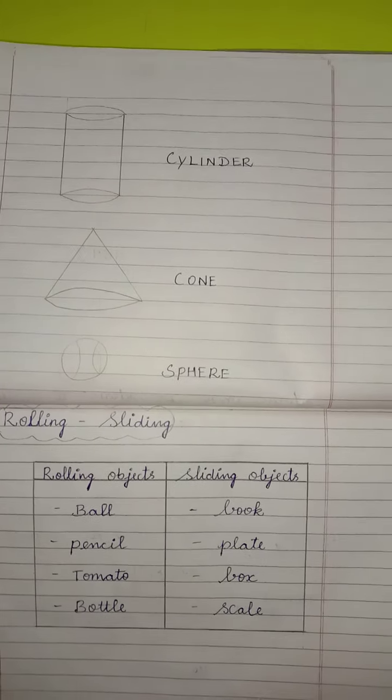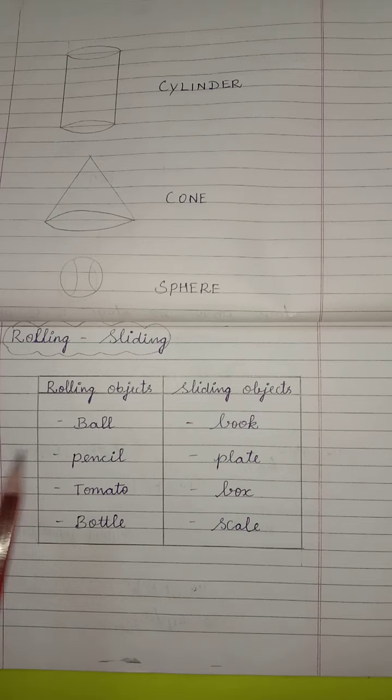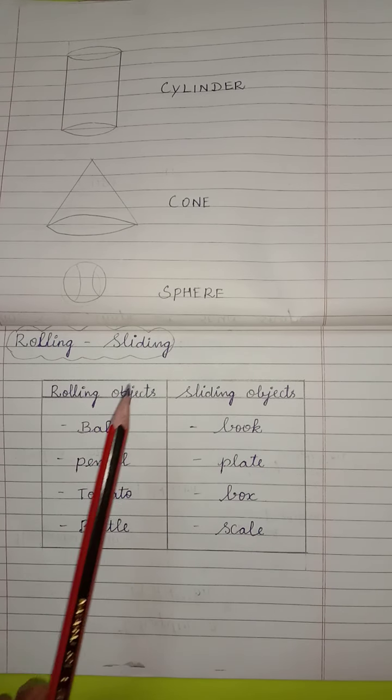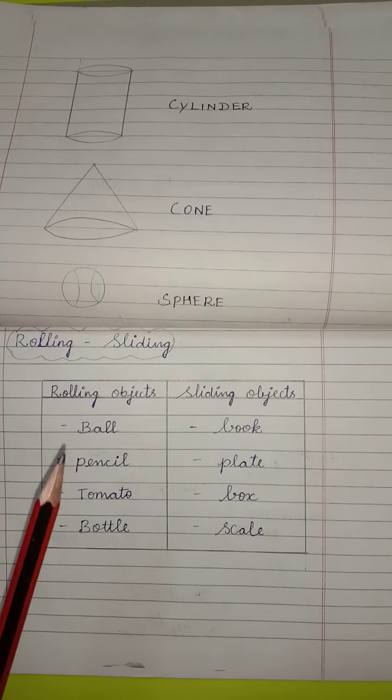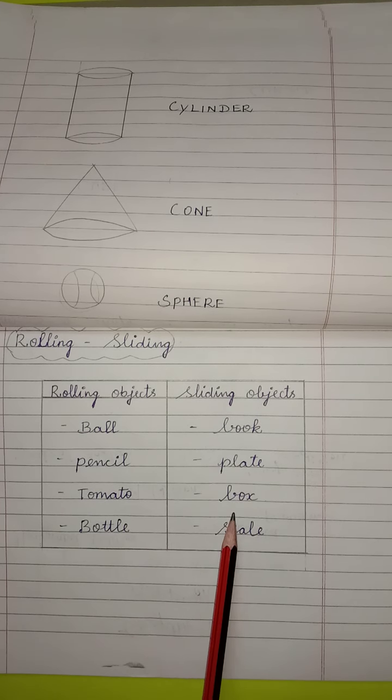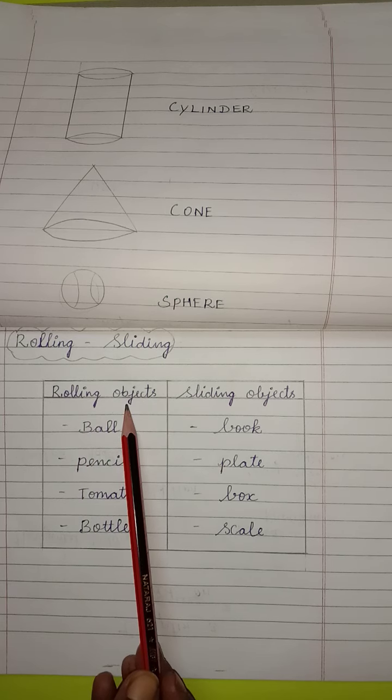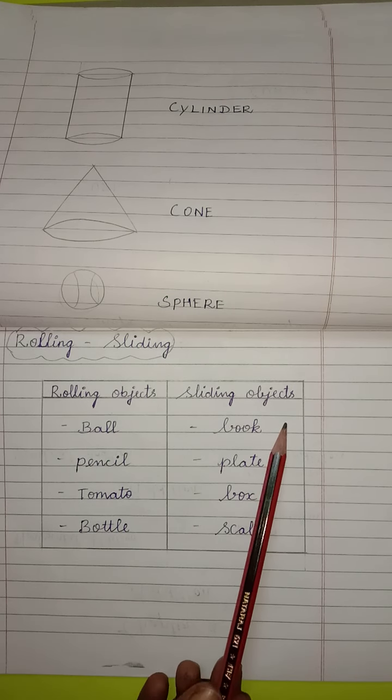Then, after finishing the 3D shapes, come to rolling and sliding. We have already seen rolling and sliding children. Now, make a two tabular column. Write here, rolling objects. Write here, sliding objects.